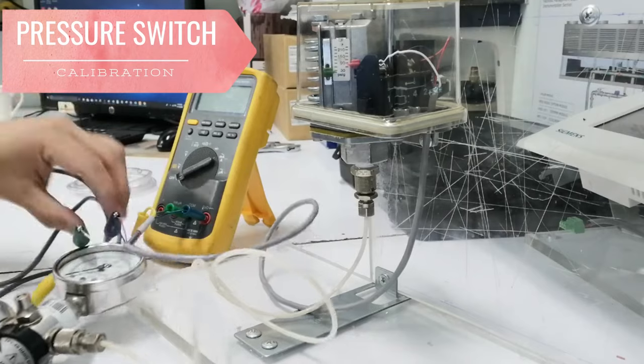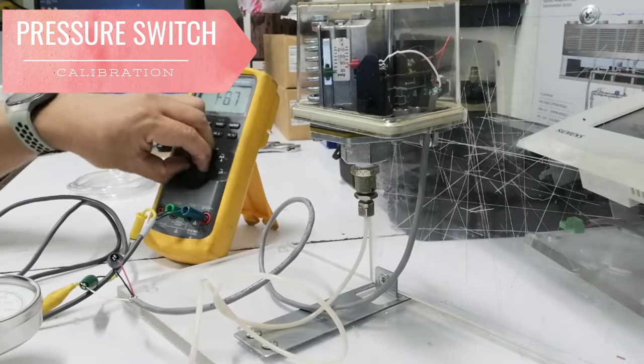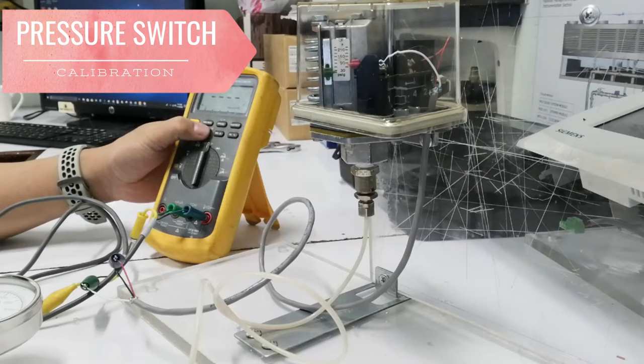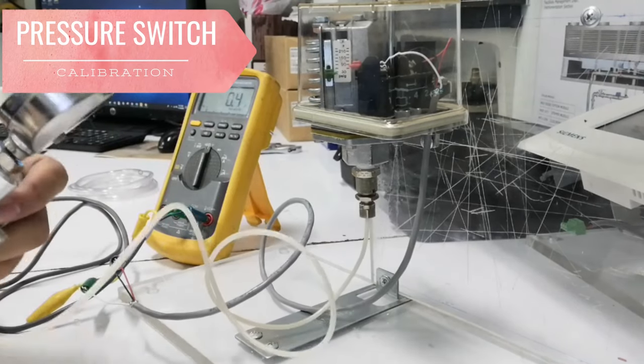We will use a pneumatic pressure hand pump to apply pressure to the pressure switch, and connect wire 1 and 2 to the multimeter in continuity mode.